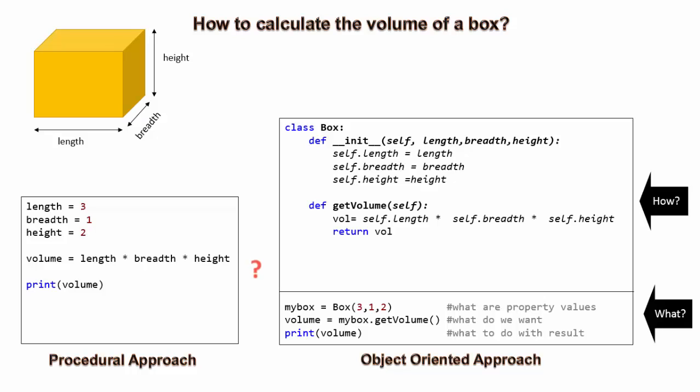So, which approach is better? Well, it depends. If taking three parameter values and multiplying them to get the result is the only thing we want to do, then no need to create box object. However, often the life is not so simple.